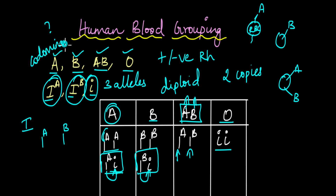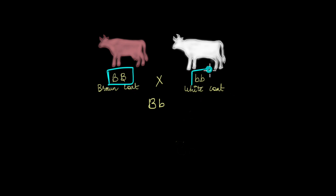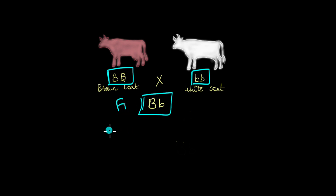You have another example of codominance in the case of coat color for cows. Let's say there is a brown coat cow which is homozygous dominant, and there is a white coat cow which is recessive — the white color is caused by the recessive gene. If you cross these two animals, the F1 would have a genotype of heterozygous, capital B and small b.